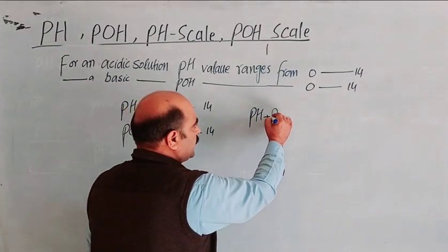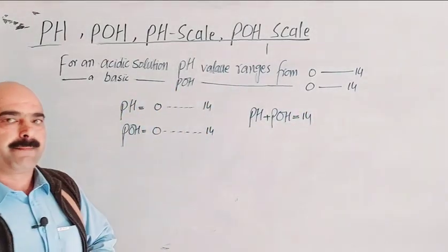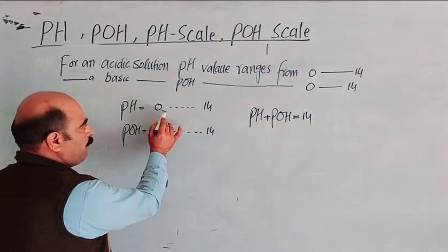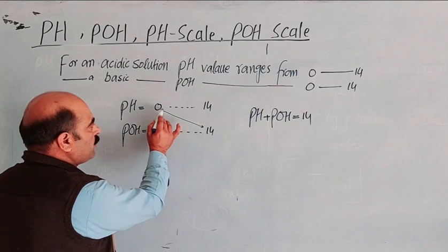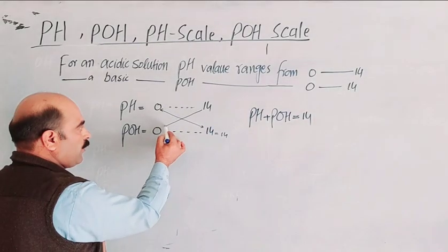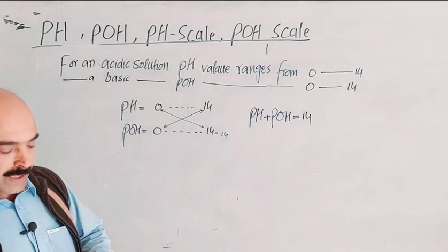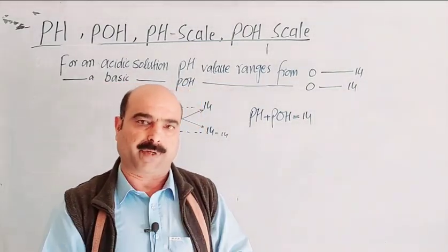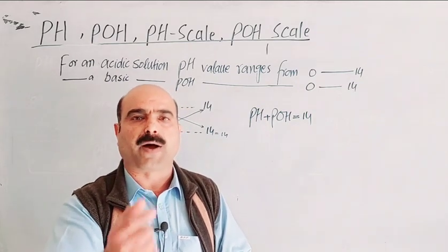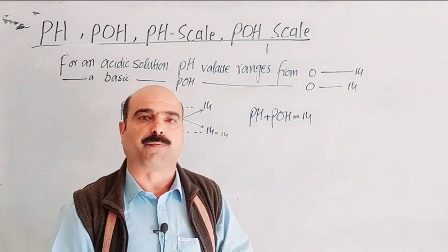The combined value of pH plus pOH is equal to 14. For example: pH 0 + pOH 14 = 14; pH 7 + pOH 7 = 14; pH 9 + pOH 5 = 14; pH 1 + pOH 13 = 14. This relationship holds at 25 degrees Celsius.